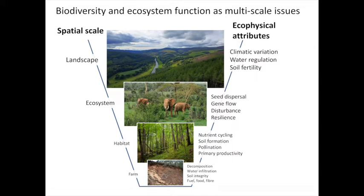We need to maintain the broader systems within which agricultural systems exist, thinking about seed dispersal, gene flow, roles of disturbance, and resilience. Coming down to local scales: nutrient cycling, pollination, primary production, and then things directly under farmer control — decomposition processes, nutrient cycling, water infiltration, soil integrity, and the provision of food, fuel, and fiber. This cross-scale issue is really important.